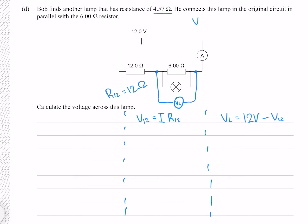We know that V equals IR via Ohm's law, and our current I is equal to V over R. So to find the current in our circuit, we need to take our source voltage of 12 and divide that by our total resistance in the circuit. The current in our circuit is 12 divided by the total resistance. But, as you might have guessed, we need to find that total resistance.